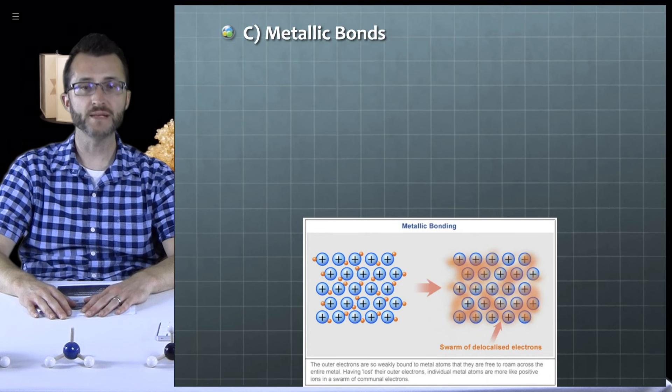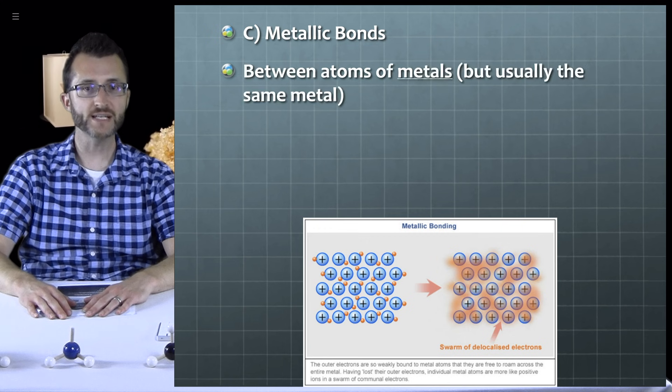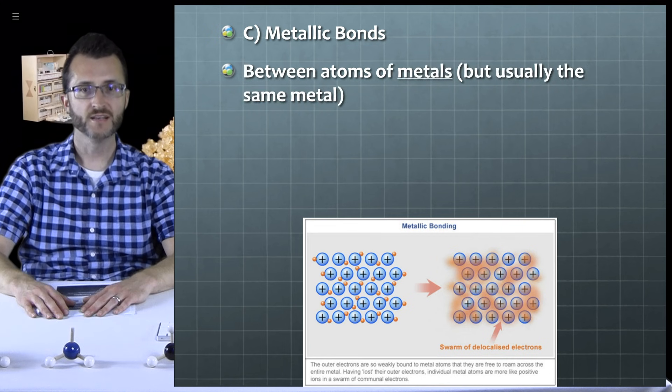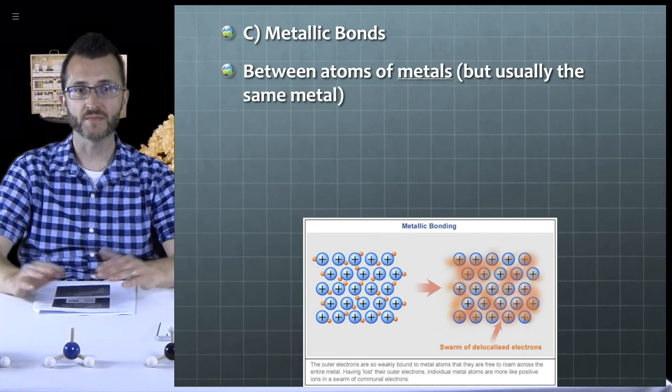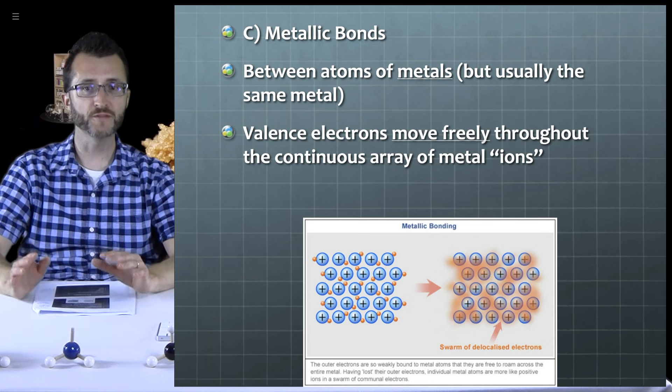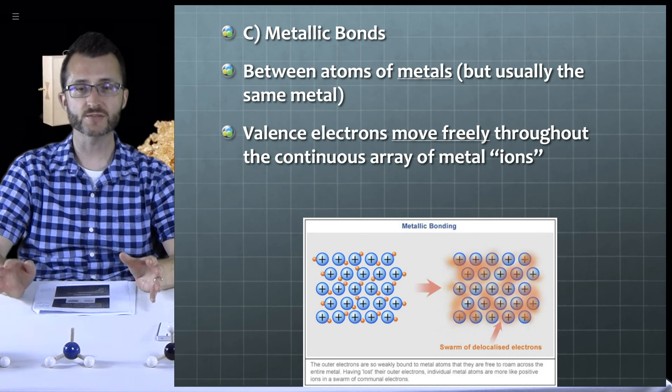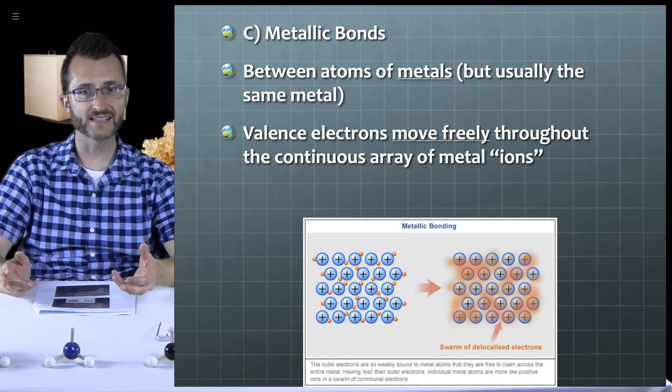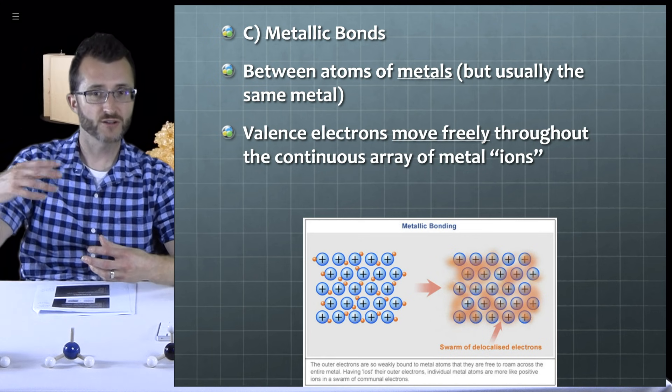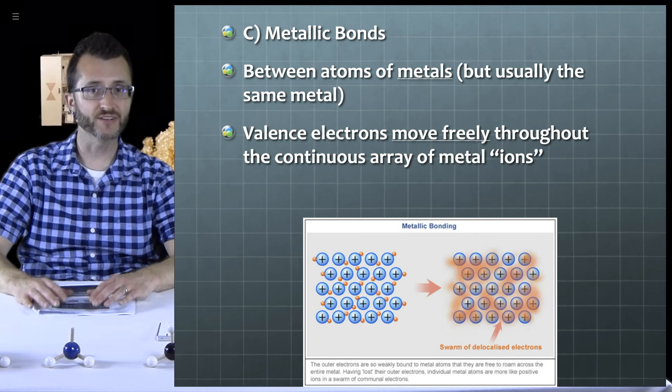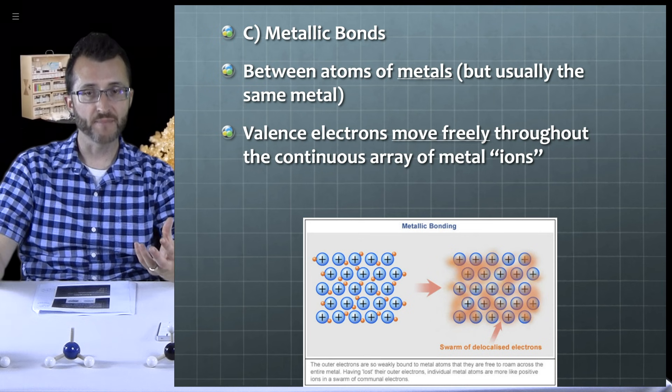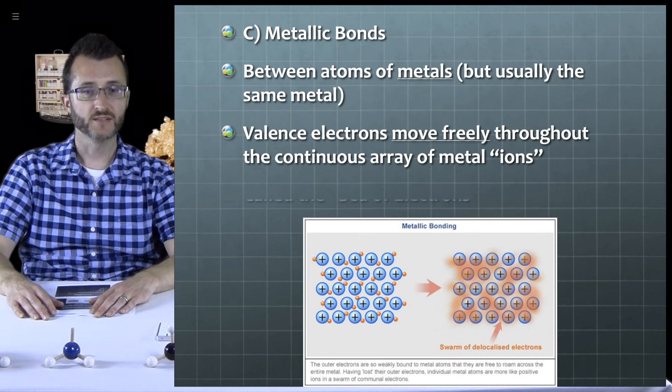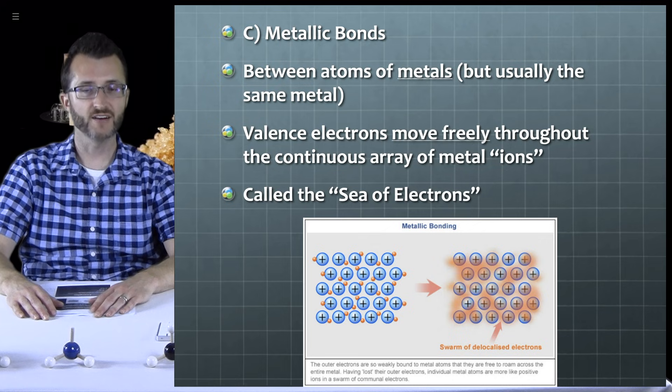The last bond type would be metallic bonds. These are between atoms of metals, as the name implies, but we're usually talking about the same metal. The valence electrons move freely throughout the continuous array of metal ions. Now the reason why we call them ions is because it's like the metal lost control of its valence electrons. However, overall, the metal sample is neutral. We also call this the sea of electrons.